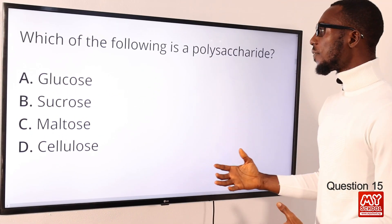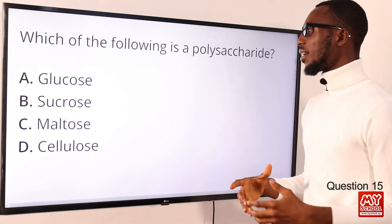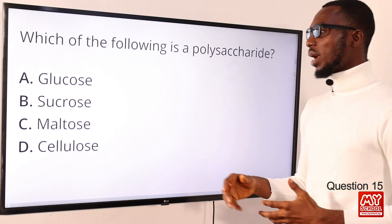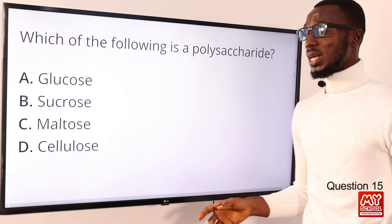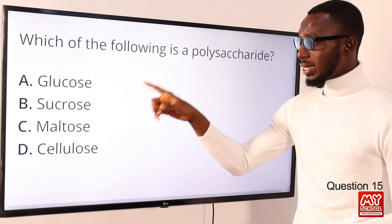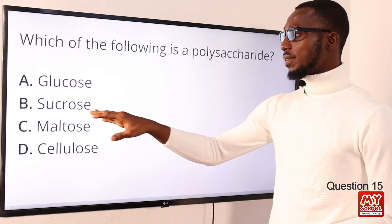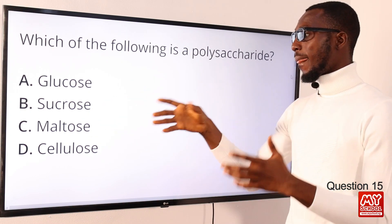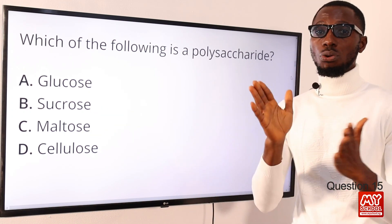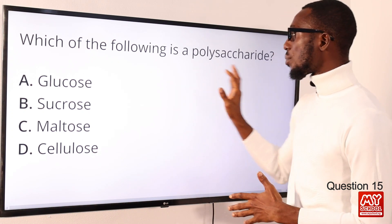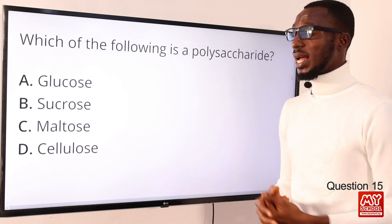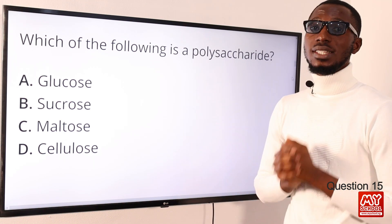Question 15: which of the following is a polysaccharide — many saccharides, meaning many monosaccharides? Monosaccharides include glucose, fructose, and galactose. Sucrose and maltose are disaccharides — sucrose is from glucose and fructose; maltose is glucose plus glucose. Cellulose is a polysaccharide, made of many monosaccharides, as is starch. The correct option is option D for cellulose.